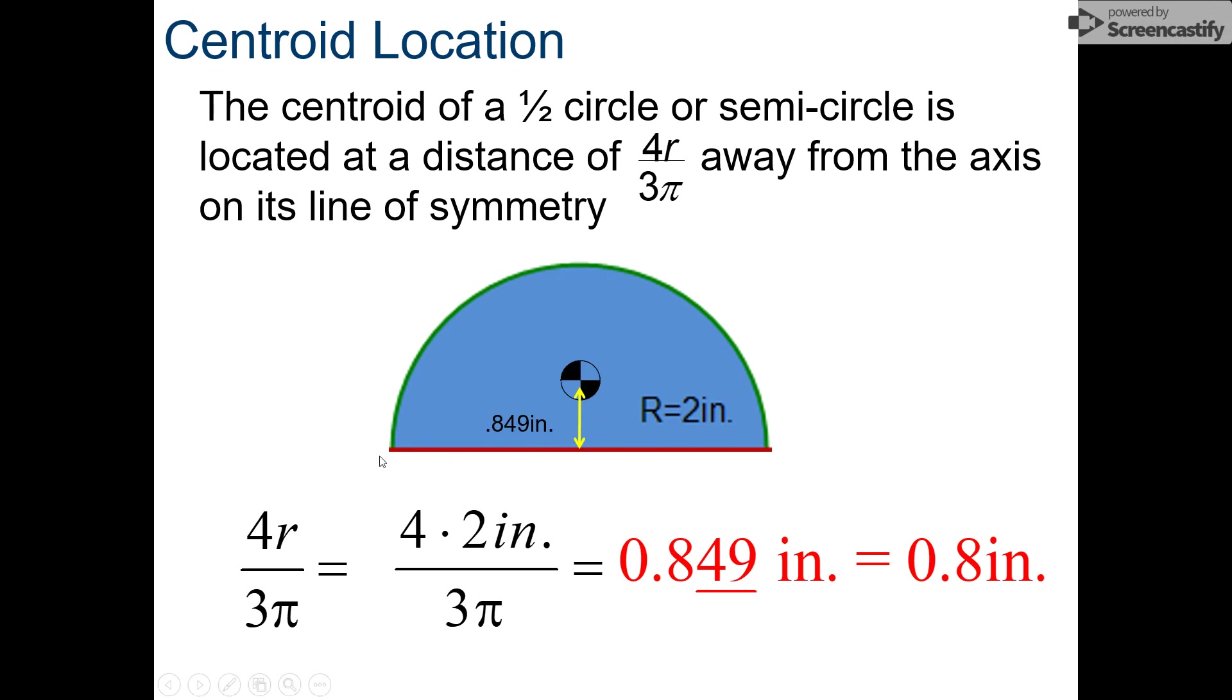My X bar is just my radius, and my Y bar is the equation 4R over 3 pi. And so my centroid ends up in this location right here.